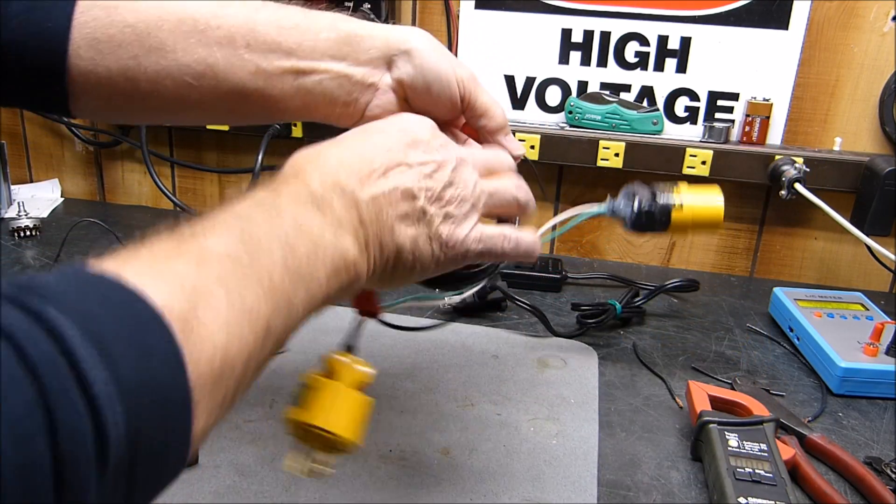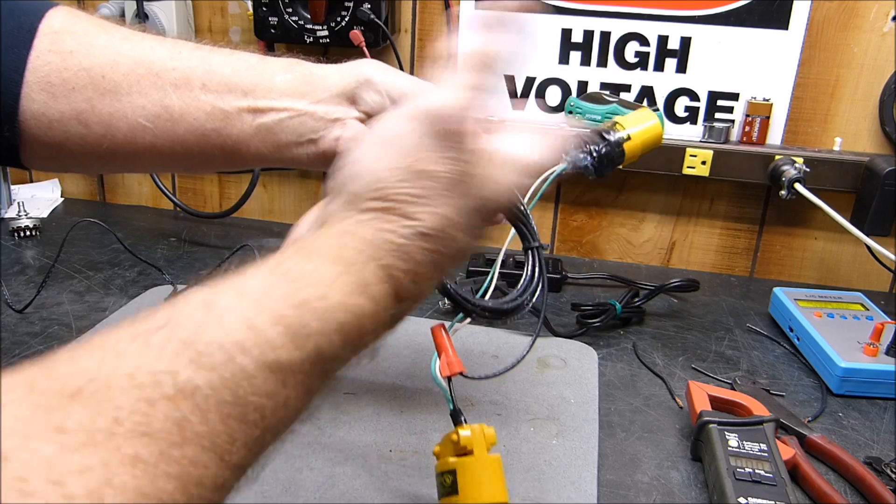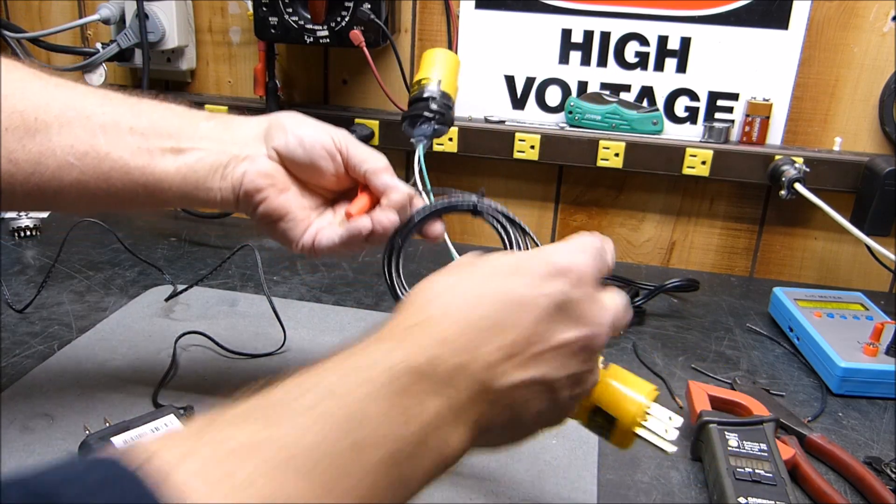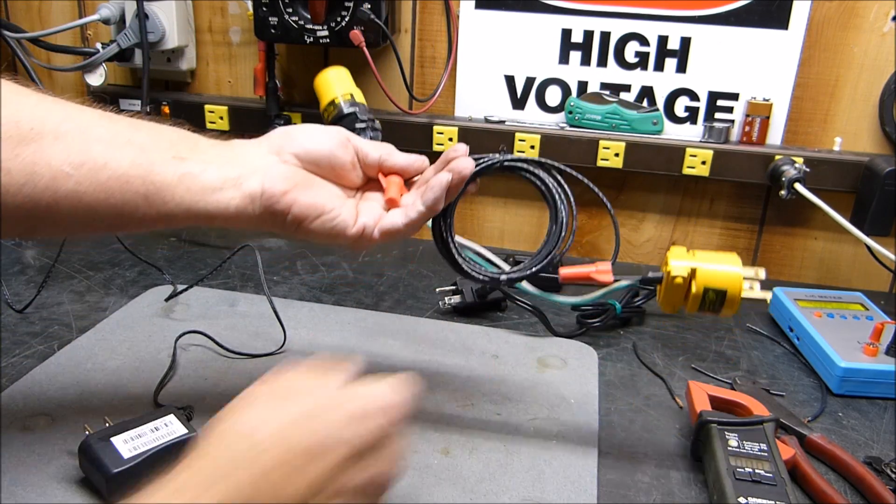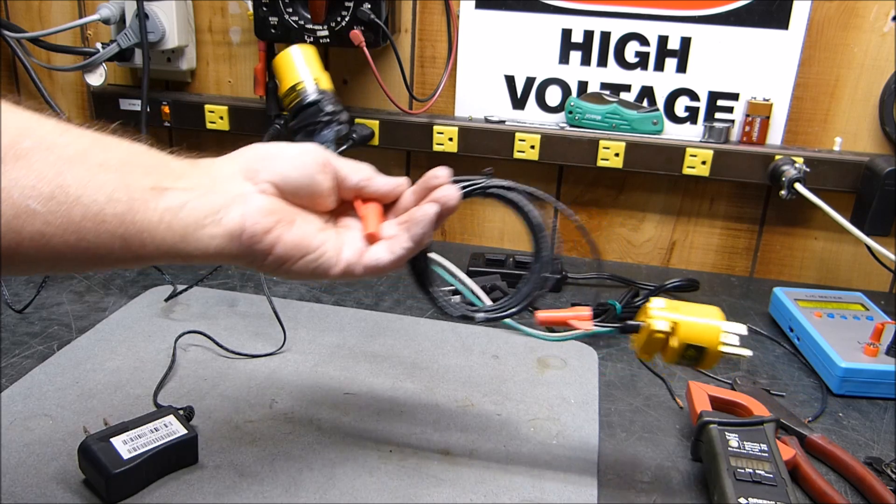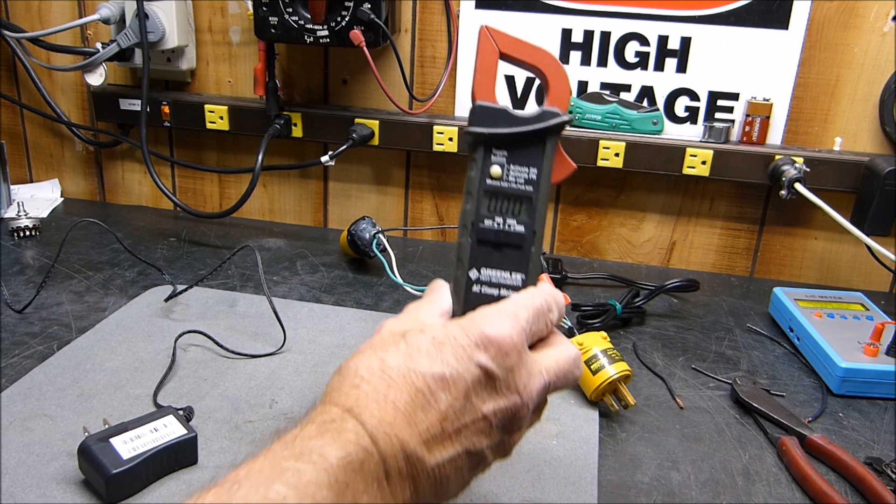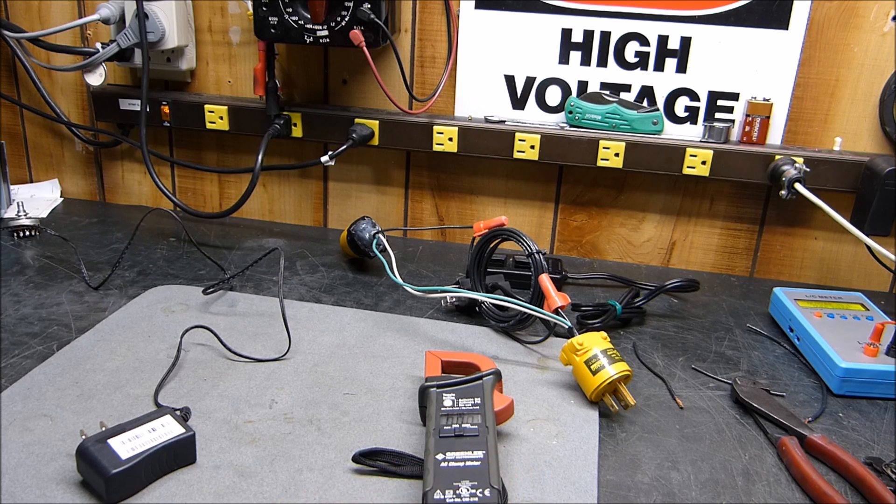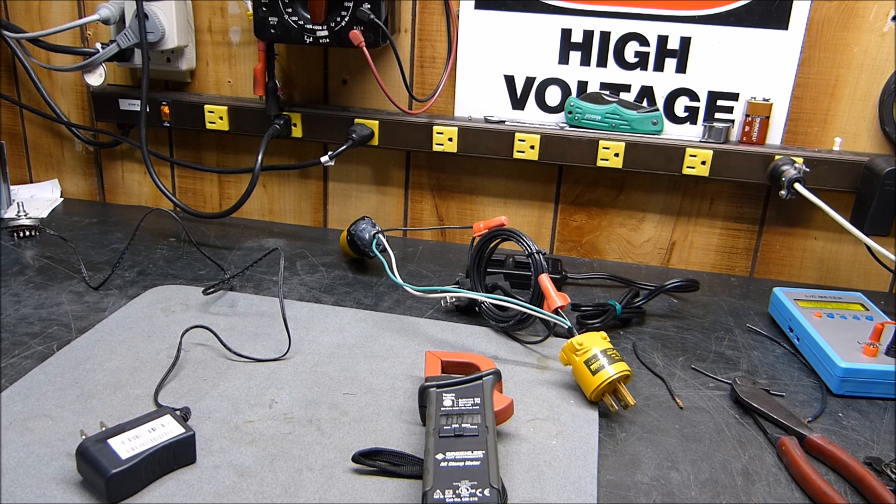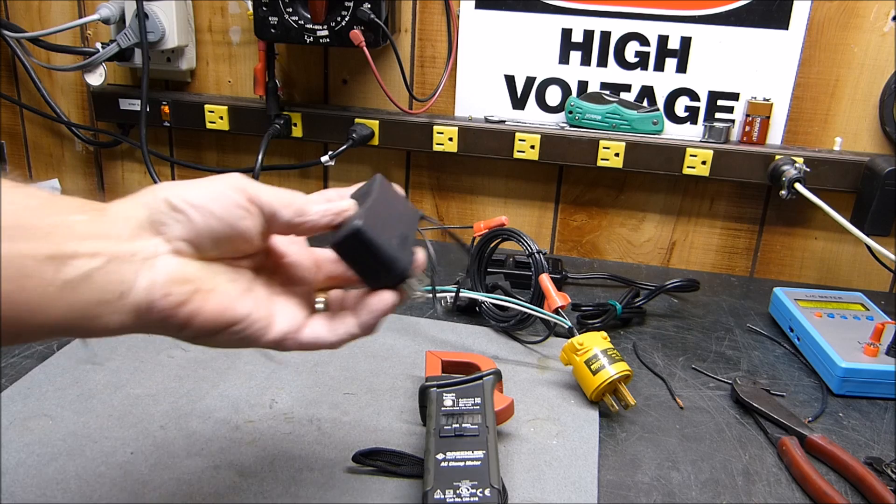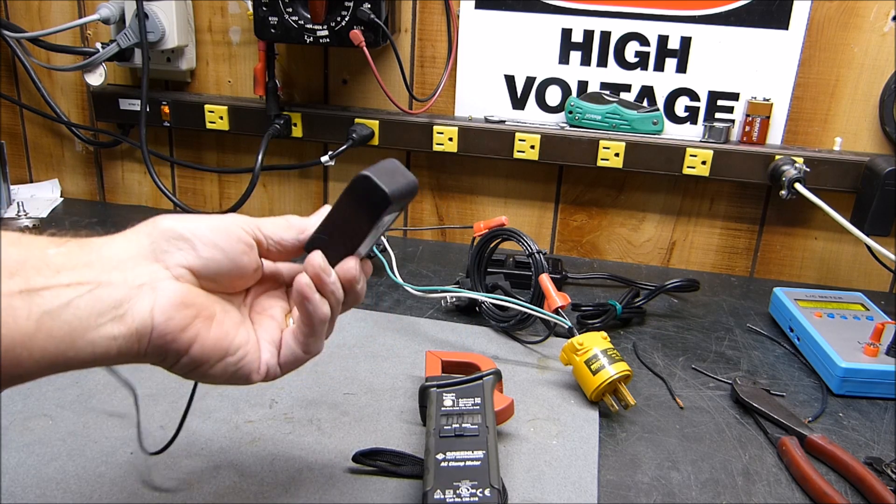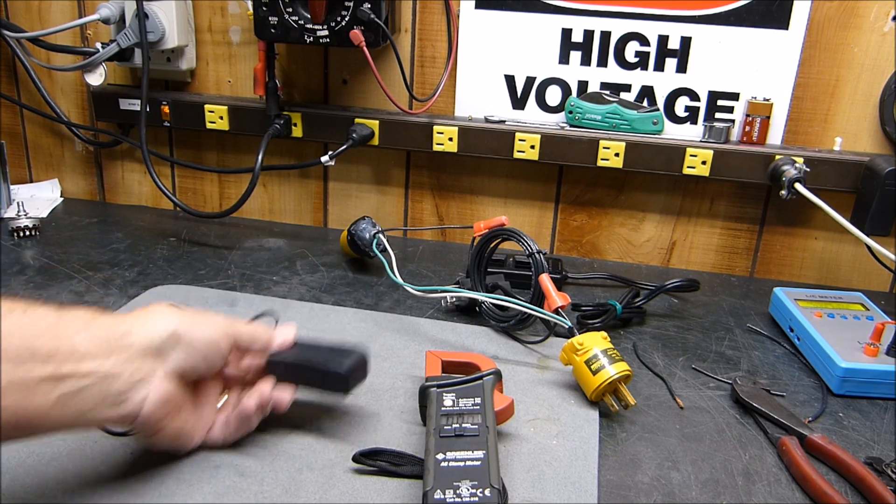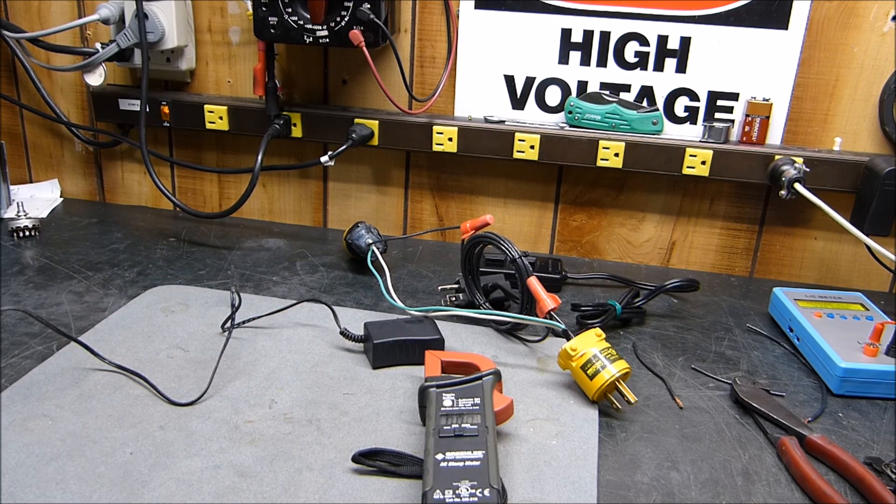Clamp it around here, you've got times one. Clamp it around there, you've got times 10 or times five, whatever you want to do. Just put five loops in it for times five or two loops in it for times two, depending on what your meter's for. And then you can measure very small items and know exactly how much current they draw. Sometimes you might want to know that. Who knows? Hope this helps. Thanks for watching.